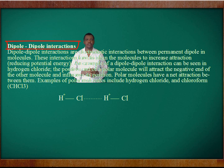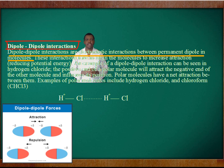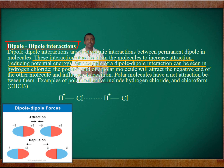Dipole-dipole interactions are electrostatic interactions between permanent dipoles in molecules. These interactions tend to align the molecules to increase interactions, reducing potential energy.